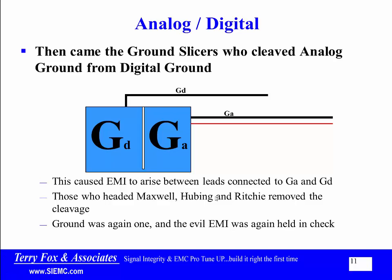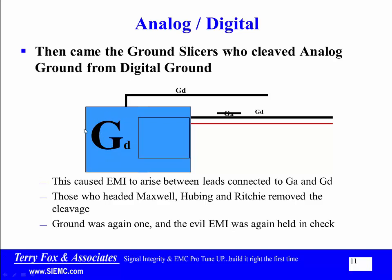Then came analog, and analog said we want nothing to do with that wicked, nasty, noisy digital ground. And we had the ground slicers, who cleaved analog ground from digital ground. Here I've got digital ground, there I've got analog ground, with a slice between the two — maybe a zero-ohm resistor — and now ground digital is a different voltage than ground analog. This caused EMI to arise between the leads connected to GA and GD. Those who heeded Maxwell, Hubing, and Ritchie removed the cleavage. Again, ground was one. Ground analog is now the same ground as ground digital, so there is no voltage between these two points. Ground again was one, and the evil EMI was held in check.